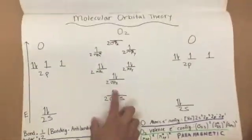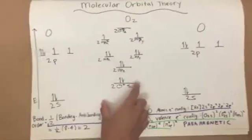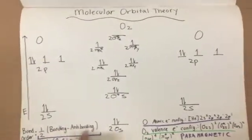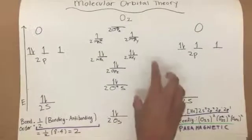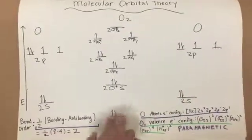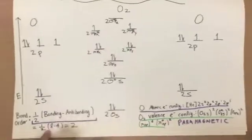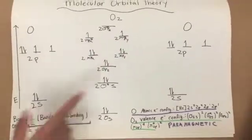We can use this diagram to figure out the bond order of this molecule. We can use the equation one-half for the number of bonding electrons minus the number of antibonding electrons. For O2, that would be eight bonding electrons minus four antibonding electrons to get a bond order of two when you divide that by two.